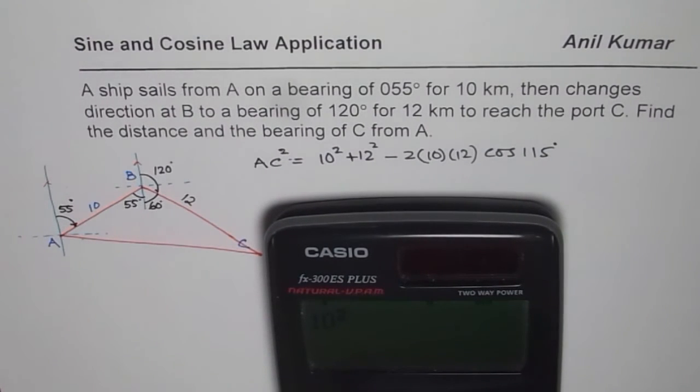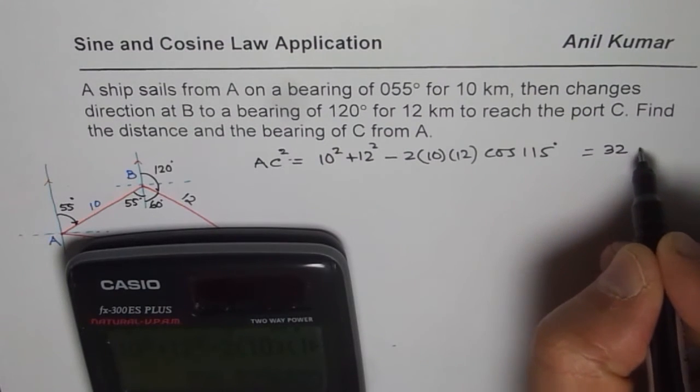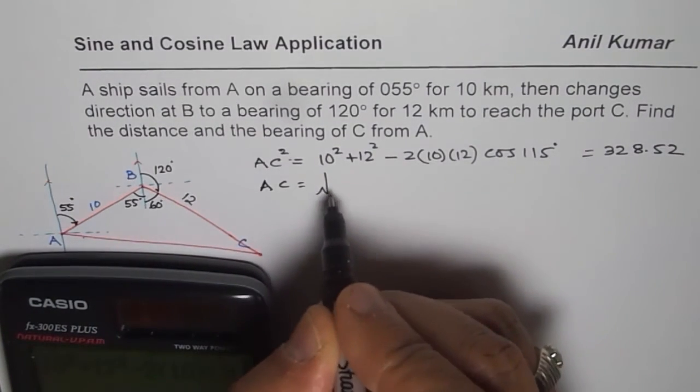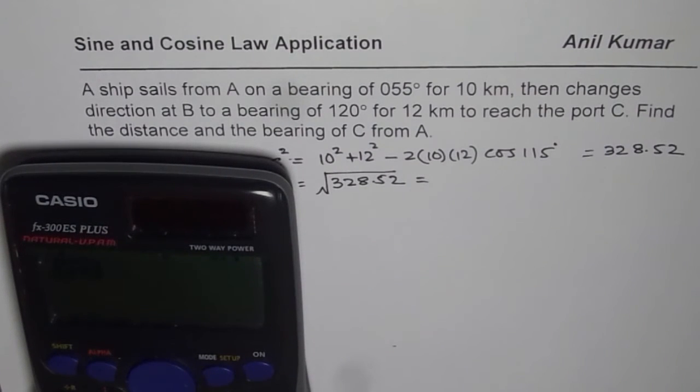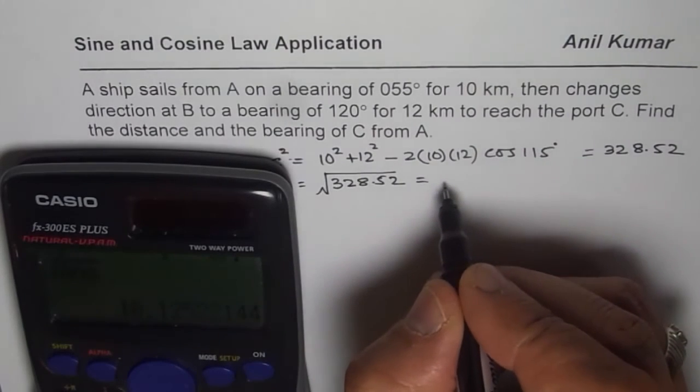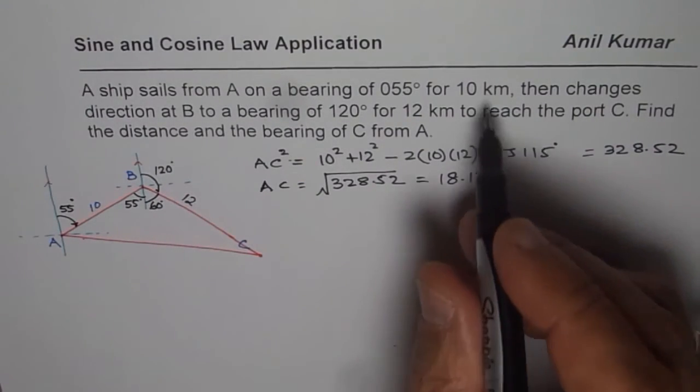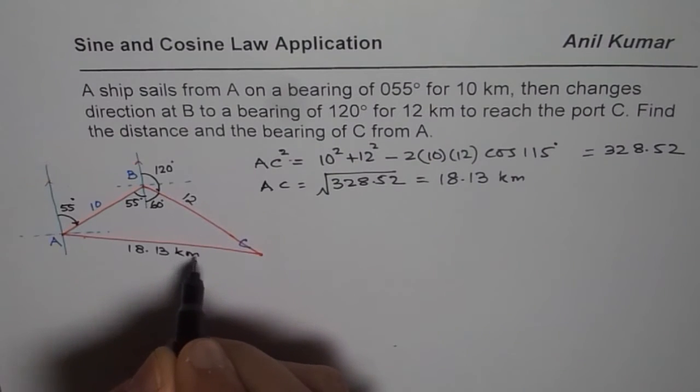That is AC square. Let us use calculator and find this answer. So we get 10 square plus 12 square minus 2 times 10 times 12 times cos of 115. That is equal to 382 point, let me write down here, 328.52. So that is AC square. AC is going to be square root of this number, which is 328.52. So let us do square root of this. We have square root of our answer and that is equal to 18.125, so 18.13. So we have 18.13 and the units are kilometers. We get AC as 18.13 kilometers.